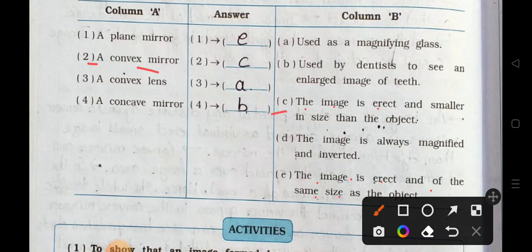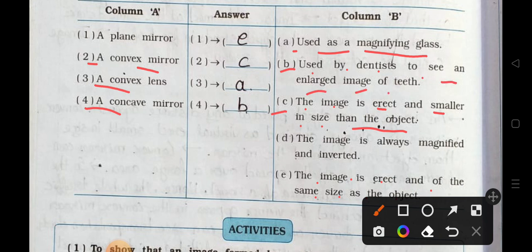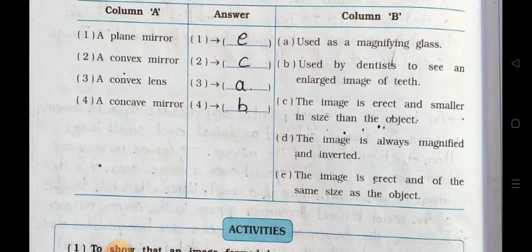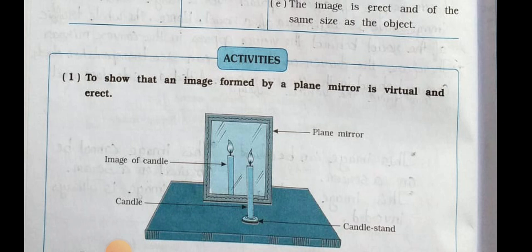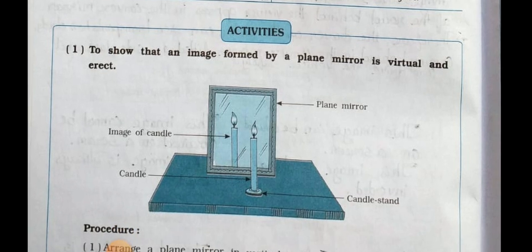Number two, convex mirror matches with C – the image is erect and smaller in size than the object. Number three, convex lens matches with A – used as a magnifying glass. Number four, concave mirror matches with B – used by dentists to see an enlarged image of teeth.